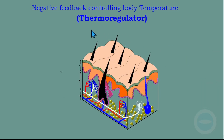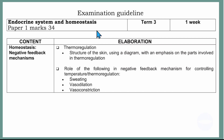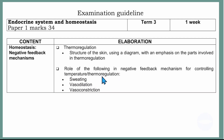Today we are looking at thermoregulation. As always in our videos, we start with the examination guideline that guides our content. We are still at endocrine system and homeostasis. In thermoregulation, you must know the structure of the skin using a diagram with emphasis on the parts involved. You must know the role of the following in the negative feedback mechanism for controlling temperature: the purpose of sweating, vasodilation, and vasoconstriction.